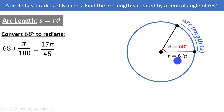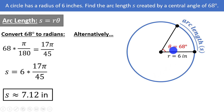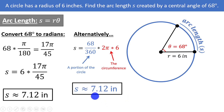So s = r × θ = 6 × (17π/45) ≈ 7.12 inches. Alternatively, without converting first, we can use the idea that arc length is some portion of the circumference: (68/360) × 2π × 6, which gives the same answer of approximately 7.12 inches.